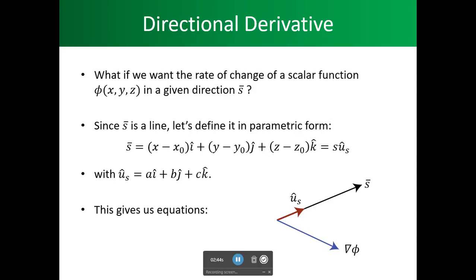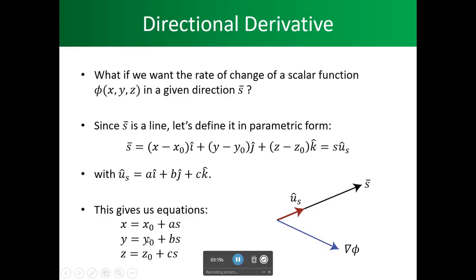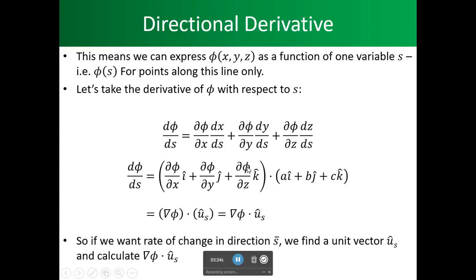This gives us the equation of the line. When we solve for the x component, the y component, and the z component, we are setting x minus x₀ equal to a and solving for x. We set b equal to y minus y₀, and we set c equal to z minus z₀.